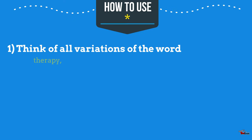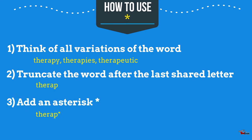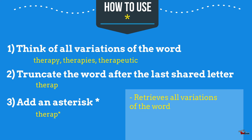Think of all the variations of the word, truncate it after the last shared letter, and add an asterisk. This will ensure that the database knows you want all the variations of the word possible, and will broaden the set of relevant results retrieved.